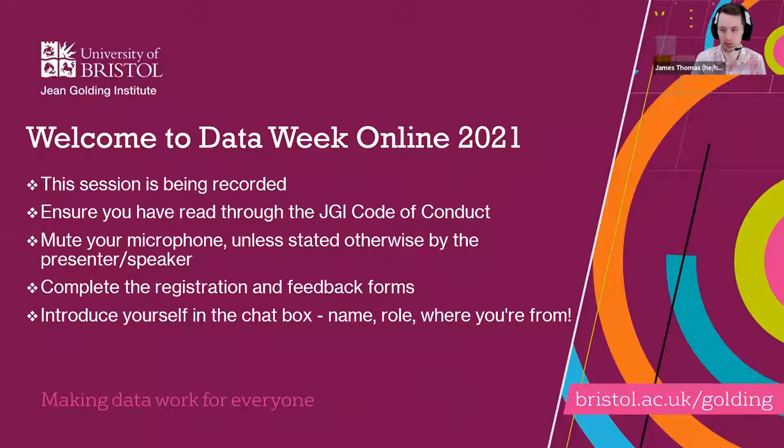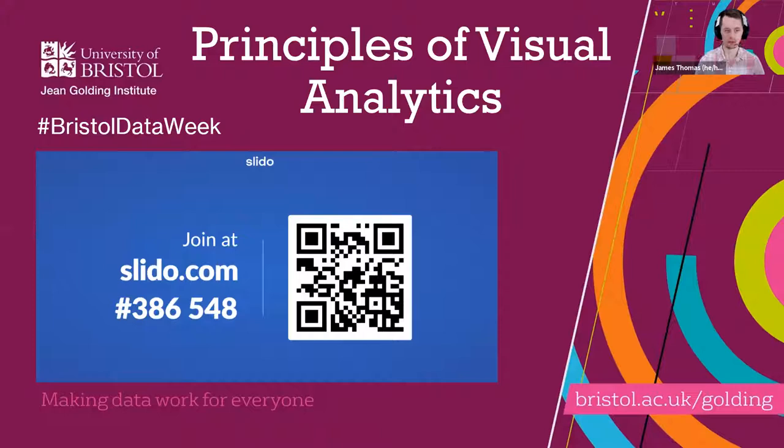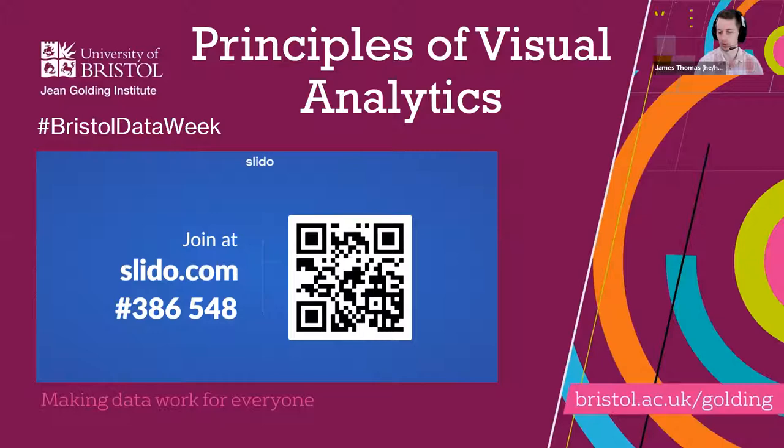Because we've got so many participants today, we're going to be using a platform called Slido for questions and answers. This allows us to collect all the questions as we go through, and you can upvote other people's questions. You can scan the QR code or go to slido.com and enter the code 386548 to get through to the Q&A.